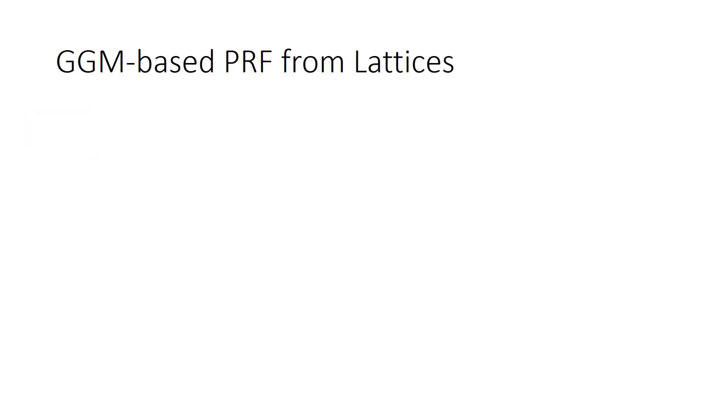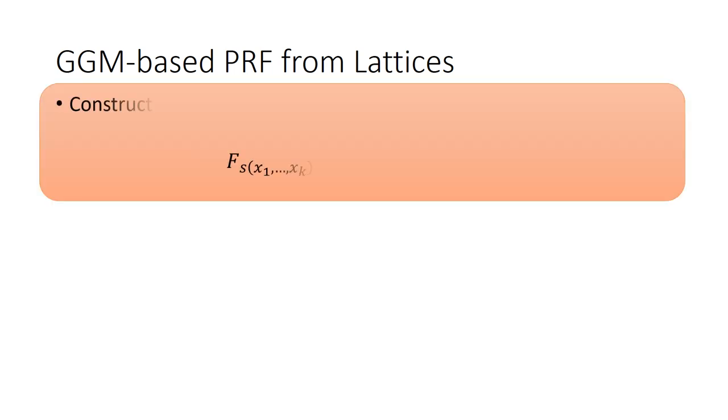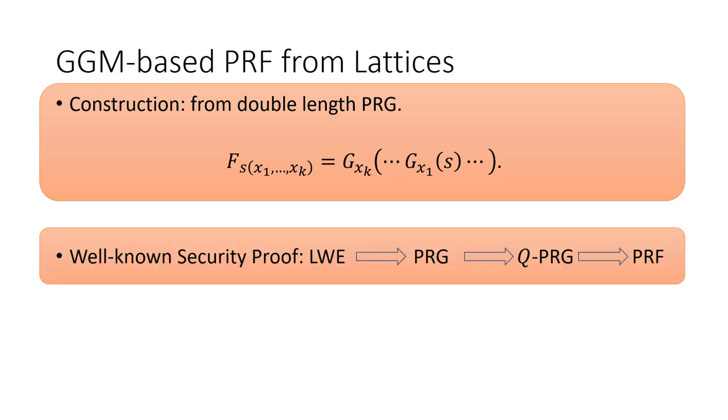Next, let us recall the GGM-based PRF. This is its construction from double-length PRG. Generally, the well-known GGM-based PRF is proved from LWE to PRG to Q-PRG to PRF, where Q is the query times conducted by the adversary. Here, we use Q-PRG to indicate that all Q outputs of PRG are indistinguishable from uniform.